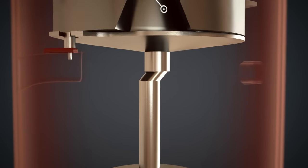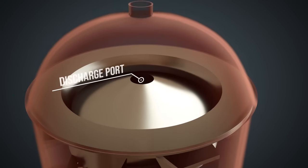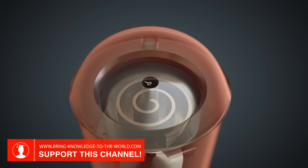The scroll housing has an inlet, as well as a discharge port, and a fixed scroll. Here, the scroll housing is made transparent.